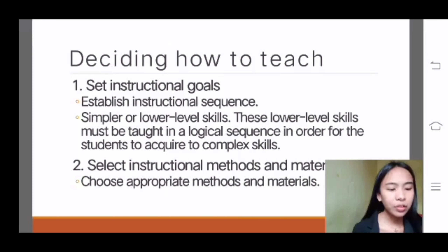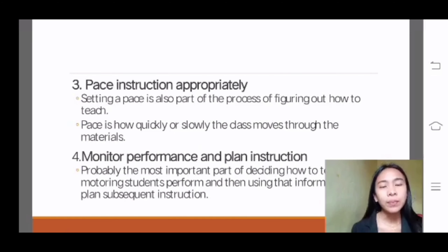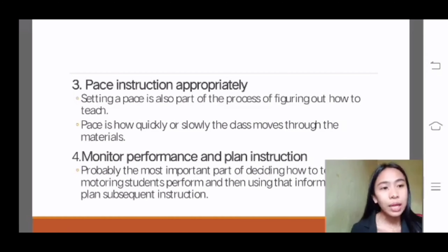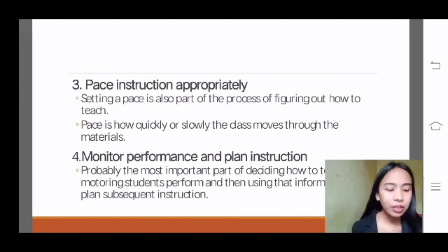Number two: select instructional methods and materials — choose the appropriate methods and materials. Number three: pace instruction appropriately. Setting up pace is part of figuring out how to teach — how quickly or slowly students move through the use of materials. Number four: monitor performance and plan instruction. This is perhaps the most important part of deciding how to teach: monitoring students' performance and then using that information to plan subsequent instruction.